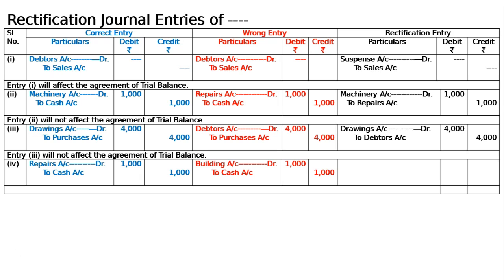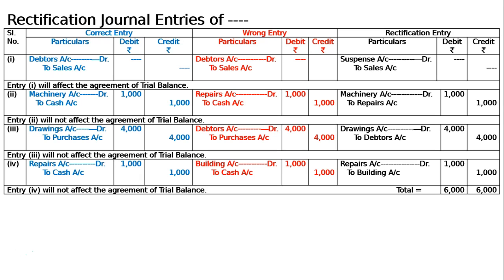Repair will come, building will go. If I debit the repair it will come in the debit; if I credit the building it will be nullified and cancelled. This building 1000 by mistake will be rectified. The rectification entry is repairs account debited to building account, 1000/1000. Being: repairs to building debited to building account, now rectified. The totalling of the rectification journal will be 6000 in the debit column and 6000 in the credit column. Entry 4, the last entry, will not affect the agreement of the trial balance as it is also a compensating error. This is the final answer.